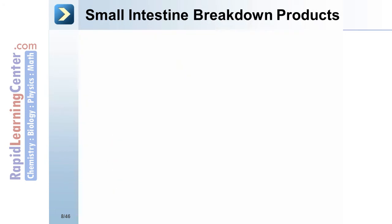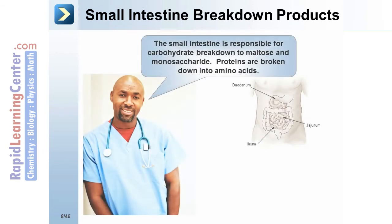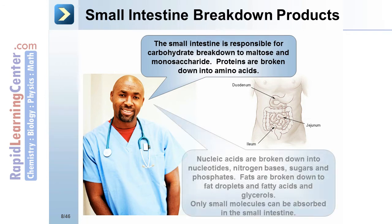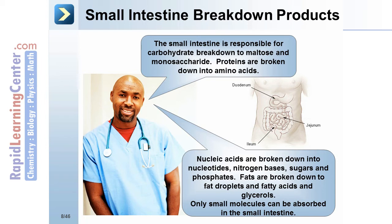Small intestine breakdown products: the small intestine is responsible for carbohydrate breakdown to maltose and monosaccharides. Proteins are broken down into amino acids. Nucleic acids are broken down into nucleotides, nitrogen bases, sugars, and phosphates. Fats are broken down to fat droplets, fatty acids, and glycerols. Only small molecules can be absorbed in the small intestine.